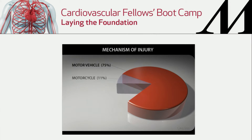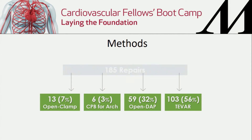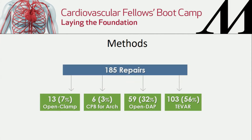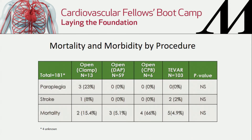The majority of these injuries were from motor vehicle accidents. Let me go through quickly. This is how we repaired the majority of them — TEVAR. They used some distal aortic perfusion, also some cardiopulmonary bypass and clamp-and-sew techniques. When they looked at it, TEVAR had the lowest paraplegia and stroke, and mortality was actually comparable to distal aortic perfusion at 5%.